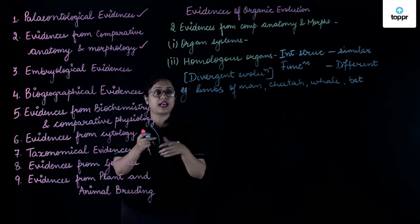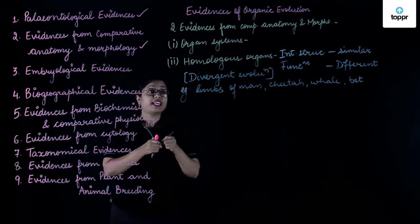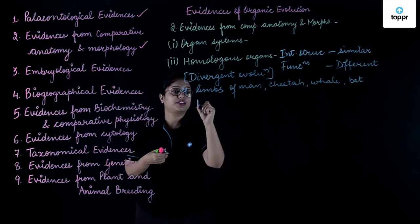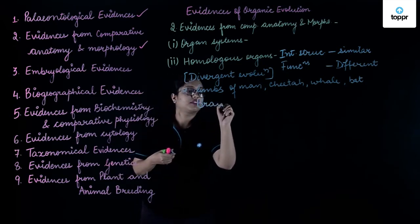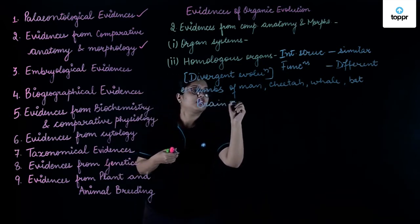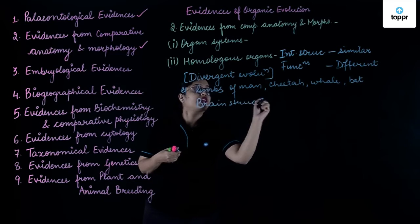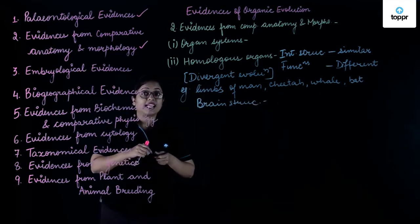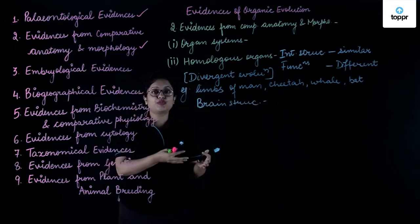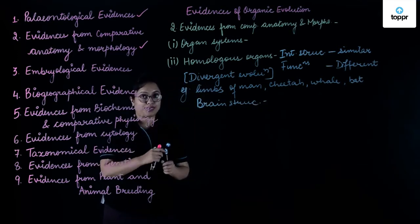One more example we can see is that of brain structure. Brain structure in fishes, frogs, cats, and humans is almost similar.